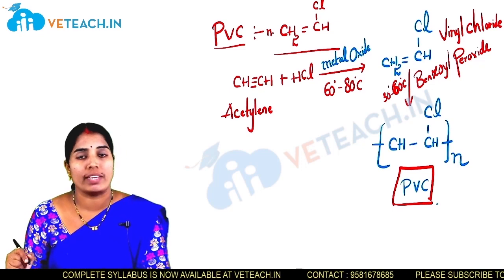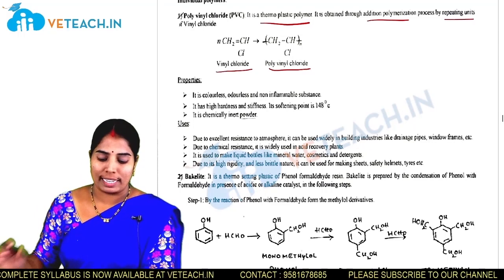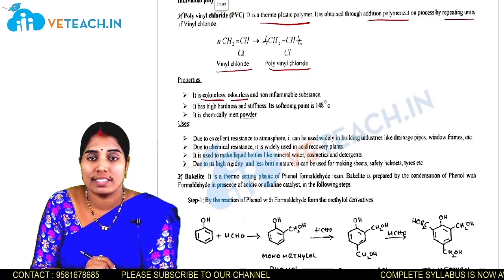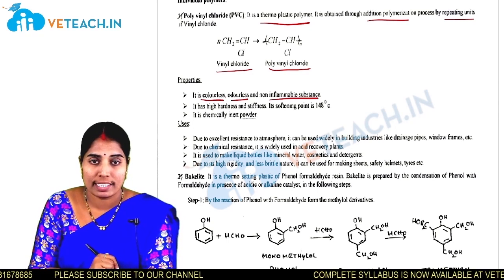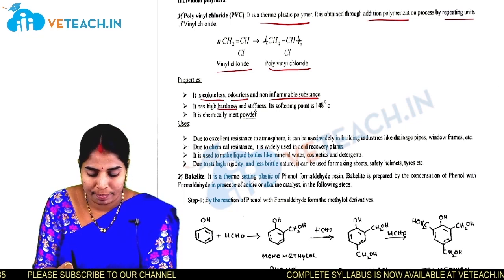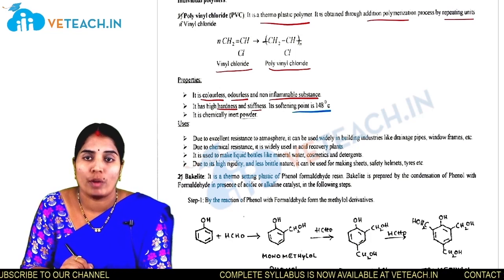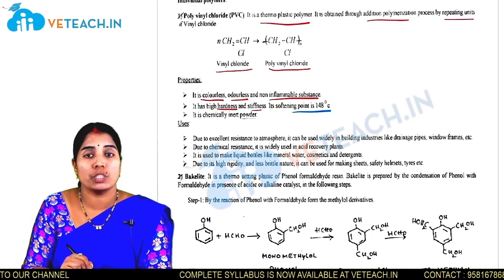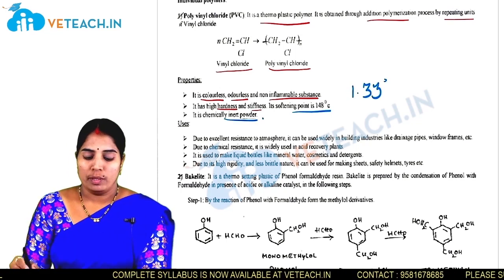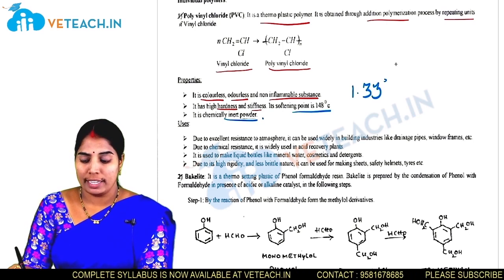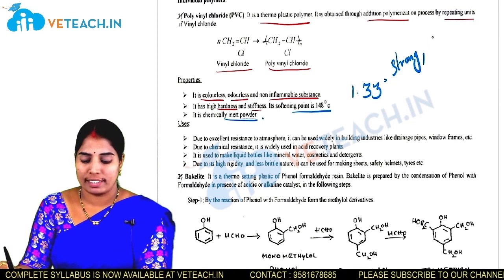Now let us see the properties of PVC. PVC is a colorless, odorless, and non-flammable substance. It has high hardness and stiffness, and its melting point is 148 degrees centigrade. It has a specific gravity of 1.33. It is a chemically inert powder and is very strong but brittle in nature.